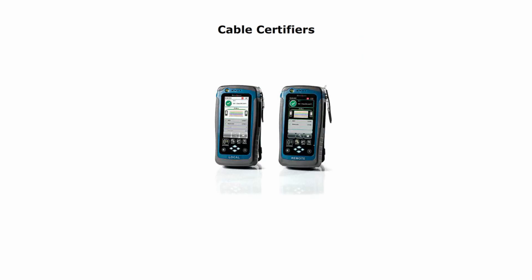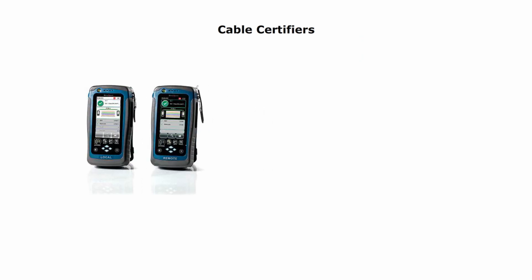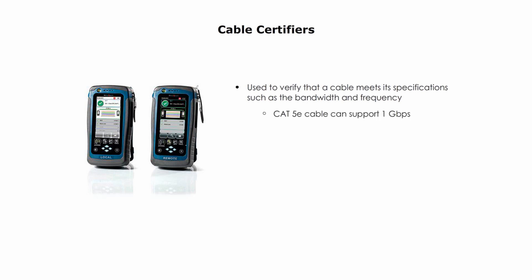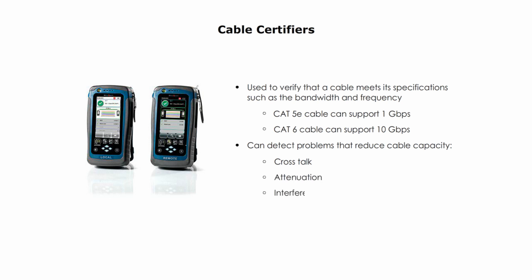Cable certifier is used to verify the cable meets its specifications such as the bandwidth and frequency. For example, it can verify if a Cat5e cable can support 1 Gbps as expected, or if a Cat6 cable can support 10 Gbps. Cable certifier can also detect problems that reduce the cable capacity, such as crosstalk, attenuation, and interference.